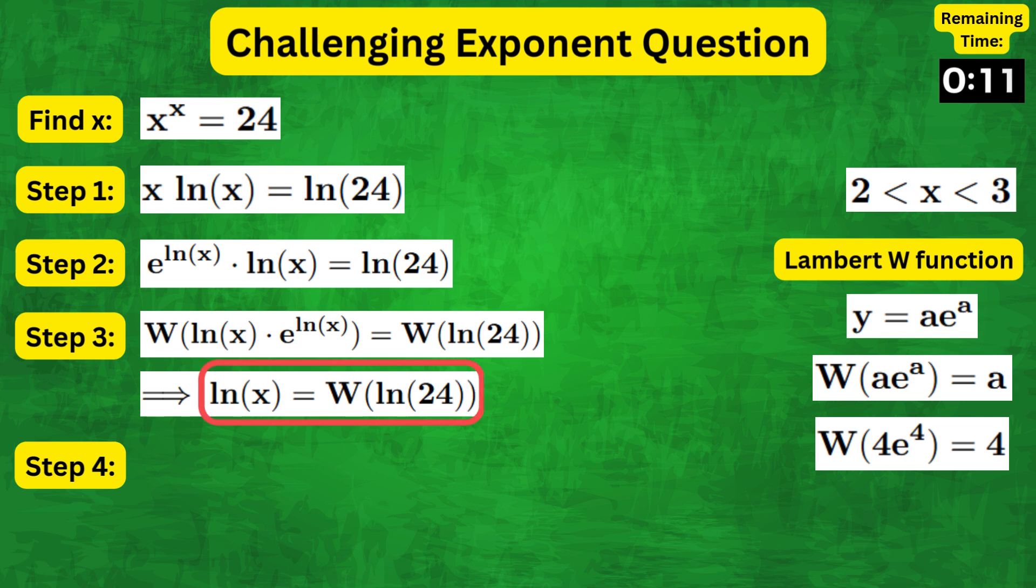Now taking exponents on both sides, we get e to the natural log of x equals e to the W of natural log of 24.